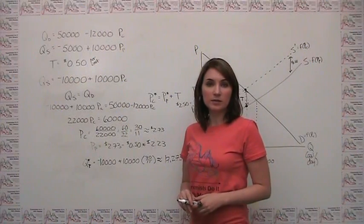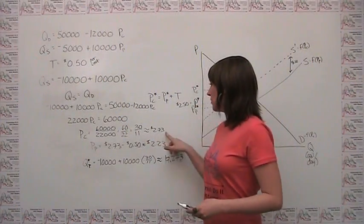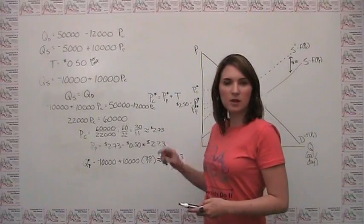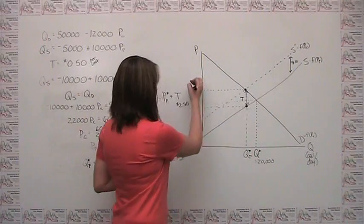So now we can think about where these items go on our graph. If our price to the consumer is $2.73, that just goes up here.